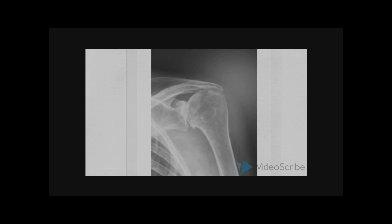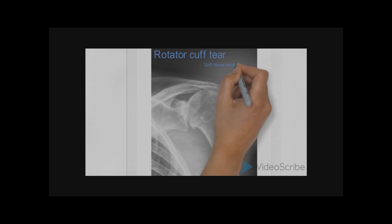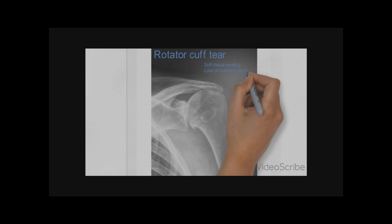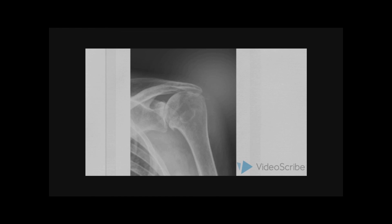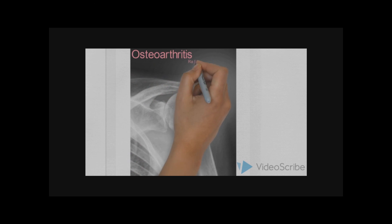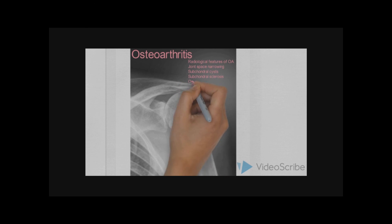We then move on to assessing rotator cuff tears. Rotator cuff pathology is usually evident on ultrasound and MRI scans, but some X-ray features may be indicative of rotator cuff injury. Features evident of rotator cuff injury may be soft tissue swelling, narrowing of the subacromial space, a high-rising elevated humeral head, and evidence of calcific tendinitis. Some of the findings in keeping with osteoarthritis are asymmetrical joint space narrowing, evidence of subchondral cysts, collapse and sclerosis, osteophyte formation, as well as soft tissue swelling and deformity in the bone.